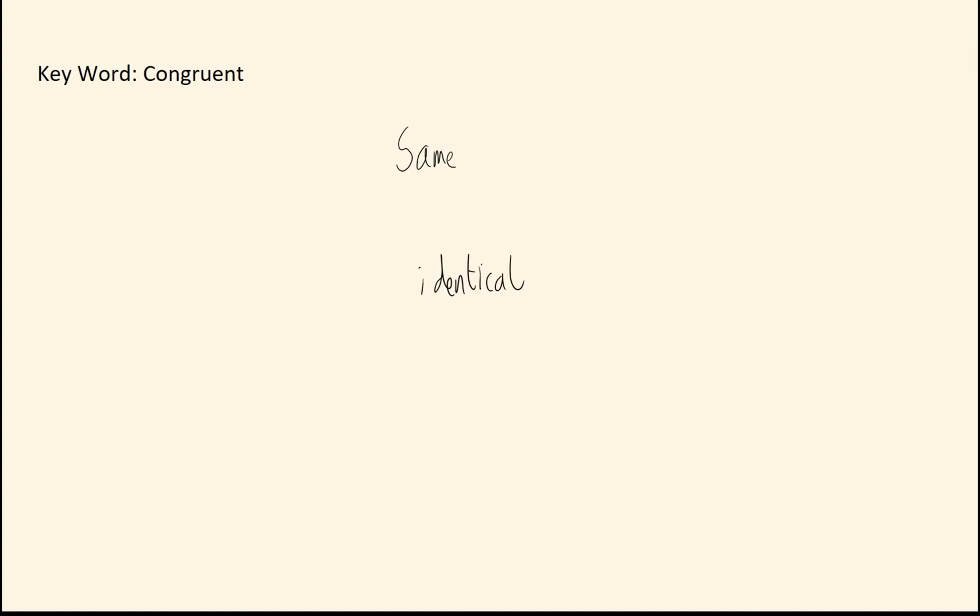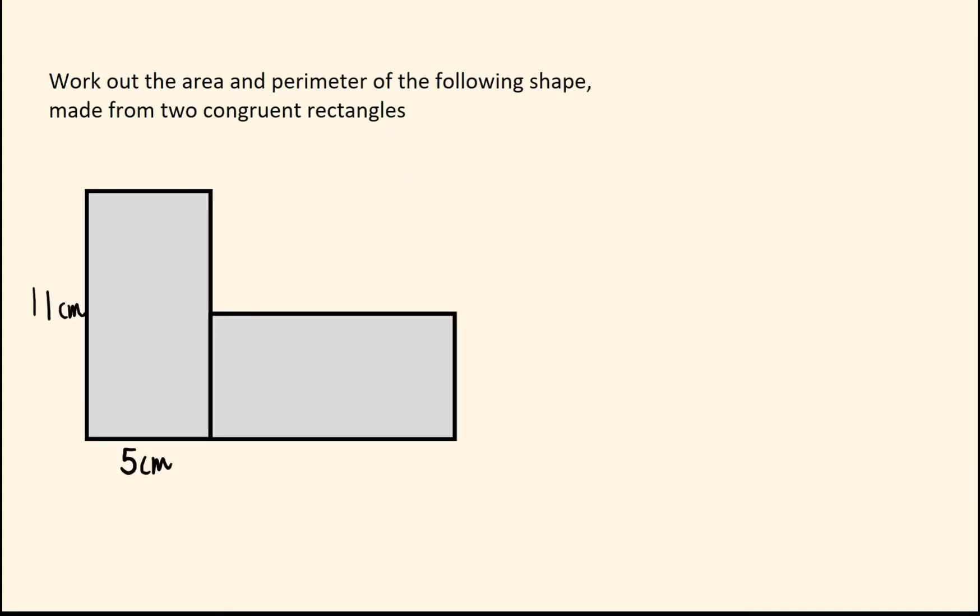So now you see it, don't let it fool you. Okay, on to an example question. Here we've got two rectangles and we are told they're congruent, so they're exactly the same. I'm going to work out the area and perimeter of this compound shape.